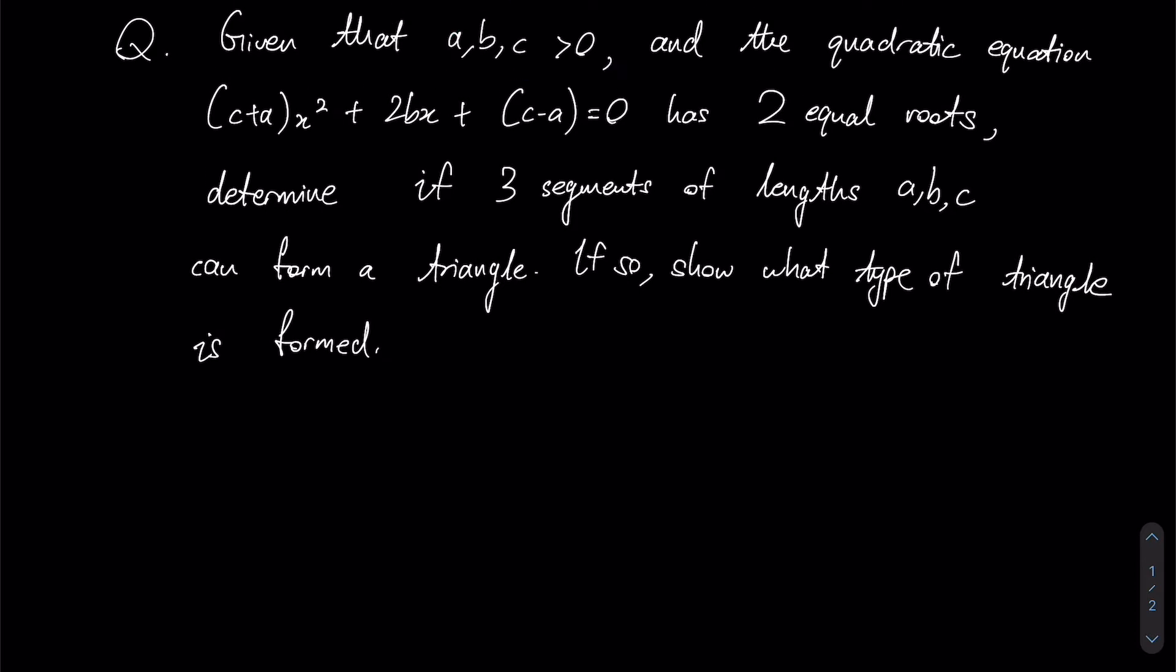Given that a, b, and c are all positive numbers and that this quadratic equation has two equal roots, determine if three segments of lengths a, b, and c can form a triangle. If so, show what type of triangle is being formed.